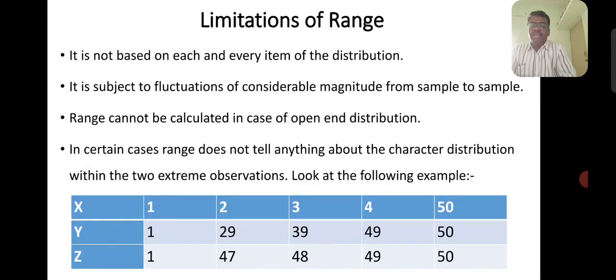Next, it has demerits. Number one, it is not based on each and every item of the distribution. It is subject to fluctuations of considerable magnitude from sample to sample. So let me give you an example. You have three series: X, Y, and Z. If you look at these three series, there are five values. X is 1, 2, 3, 4, and 50. Y is 1, 29, 39, 49, 50. Z is 1, 47, 48, 49, 50.